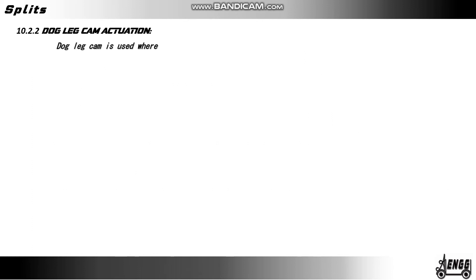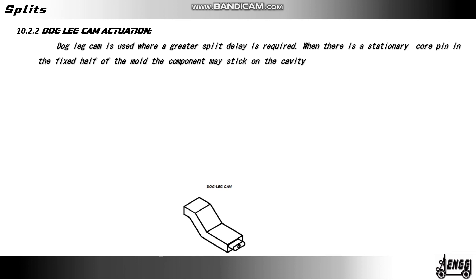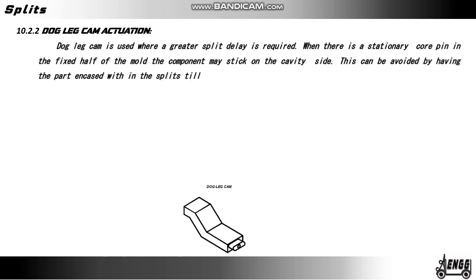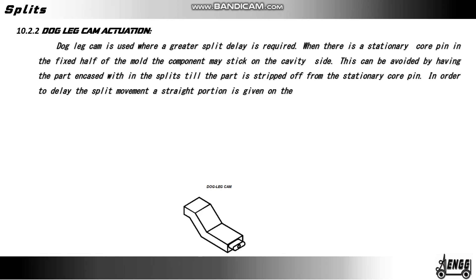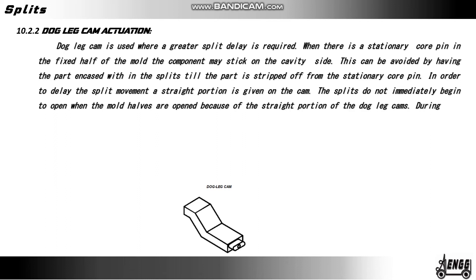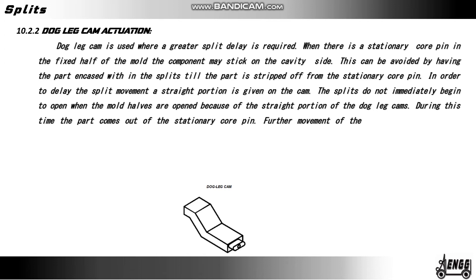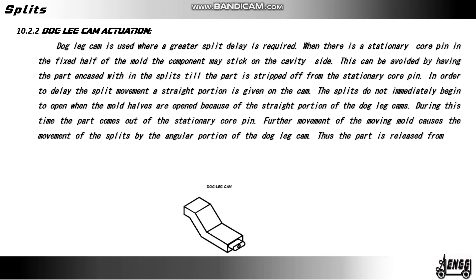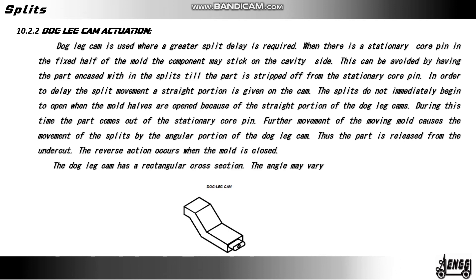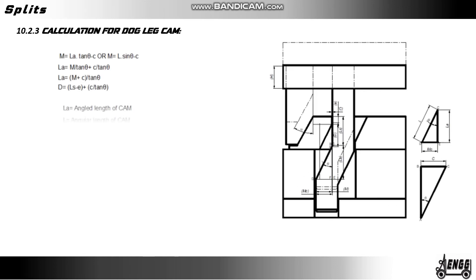Dog leg cam actuation: the dog leg cam is used where a greater split delay is required — for example, when there is a stationary core pin in the fixed half of the mold and the component may stick on the cavity side. This can be avoided by keeping the part encased with the split until the part is stripped off from the stationary core. To delay the split movement, a straight portion is given on the cam. The splits do not immediately begin to open when the mold halves separate, because of the straight portion of the dog leg cam; during this time the part comes out of the stationary core. Further movement of the moving mold causes movement of the split by the angular portion of the dog leg cam, releasing the part from the undercut. The dog leg cam has a rectangular cross section; the angle may vary from 10° to 25°. The lead-in can be tapered or radiused.